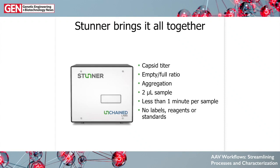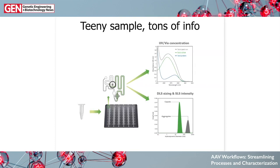Stunner brings those two technologies together to calculate answers on AAV capsid titer, empty/full ratio, and aggregation using only two microliters of sample in less than a minute — with no labels, reagents, or standards. You just use the sample that you've got.